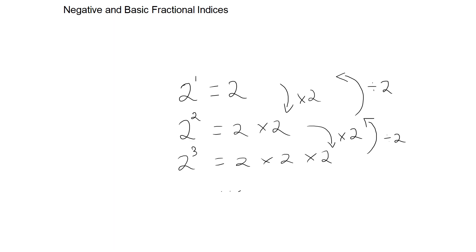So with that in mind, to go from 2 to the power of 2 to 2 to the power of 1, we divide by 2. So to go from 2 to the power of 1 to 2 to the power of 0, we divide by 2. 2 divided by 2 is 1, so 2 to the power of 0 is 1.